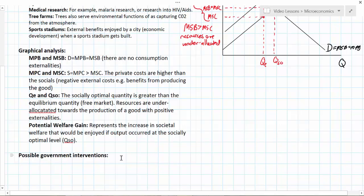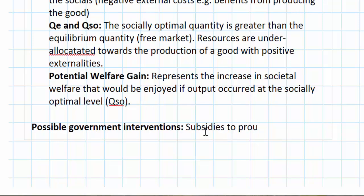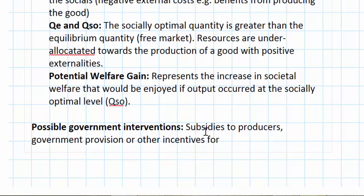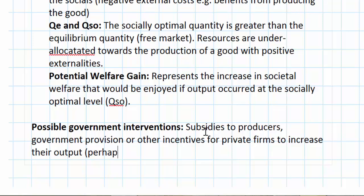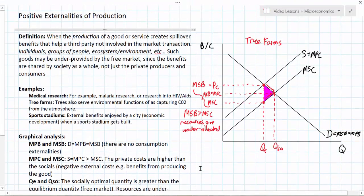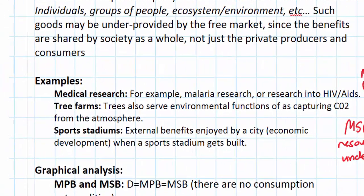That brings us to the final part of our lesson: possible government interventions to solve or mitigate the market failure of positive externalities of production. When studying negative externalities, we talked about taxes, limits, or permits. Some possible government interventions to increase output of a good that creates a positive externality include subsidies to producers, government provision, or other incentives such as tax breaks to lower the costs of production. Medical research is an obvious example of a good subsidized by government — without government spending on malaria and HIV/AIDS research, the world would be much further from achieving cures. Private individuals who use their land for tree farms are eligible for tax breaks in some countries, which acts just like a subsidy.